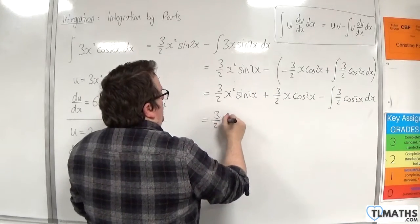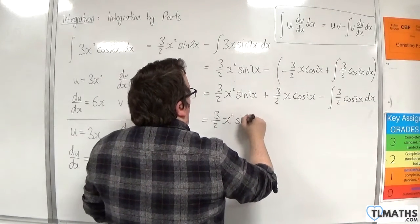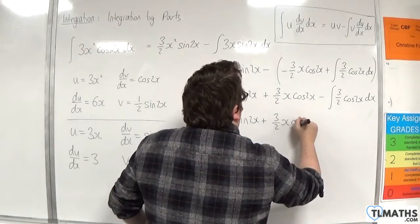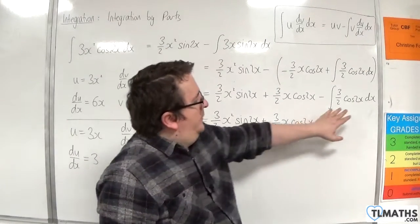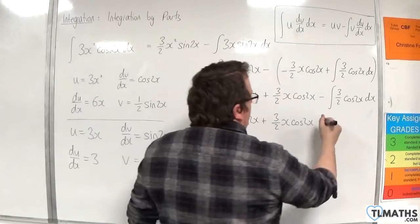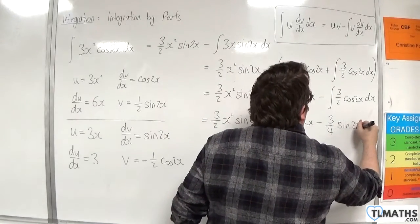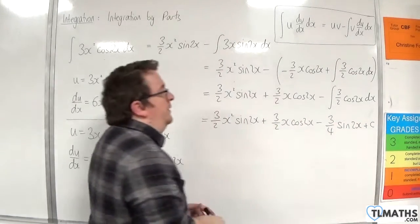So 3 halves x squared sine 2x plus 3 halves x cosine 2x. And then this will integrate to minus 3 quarters sine of 2x plus some constant c.